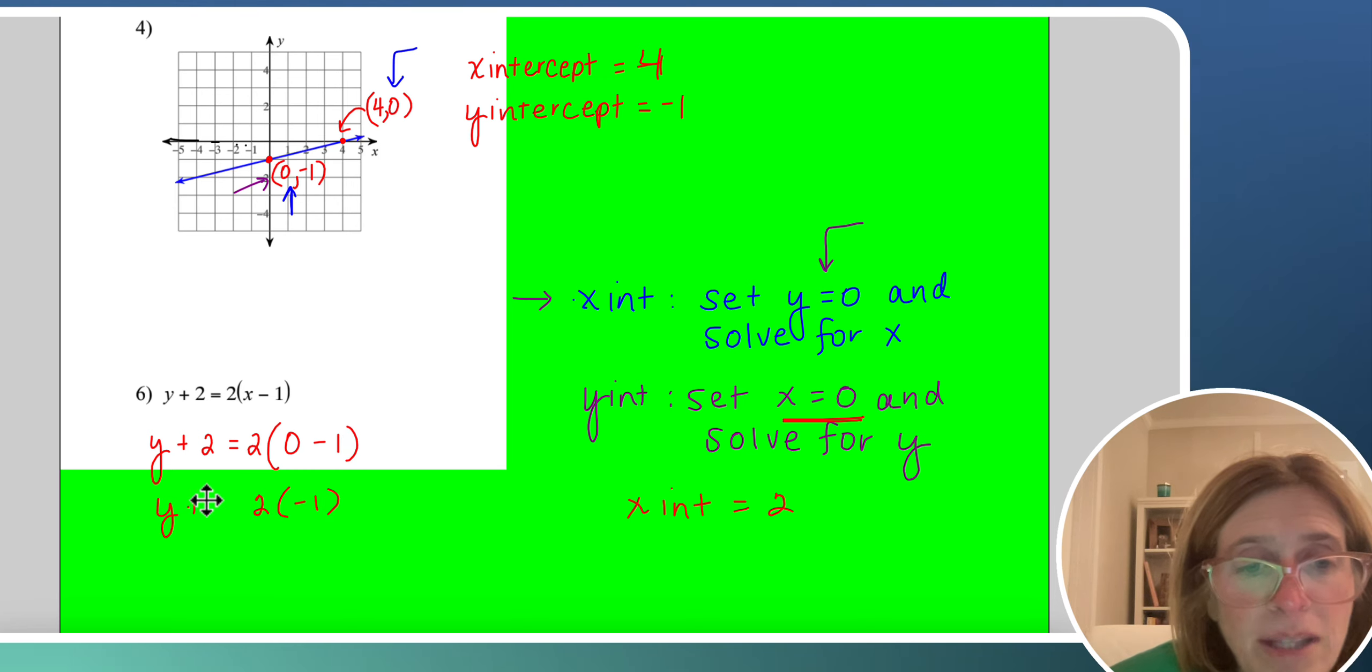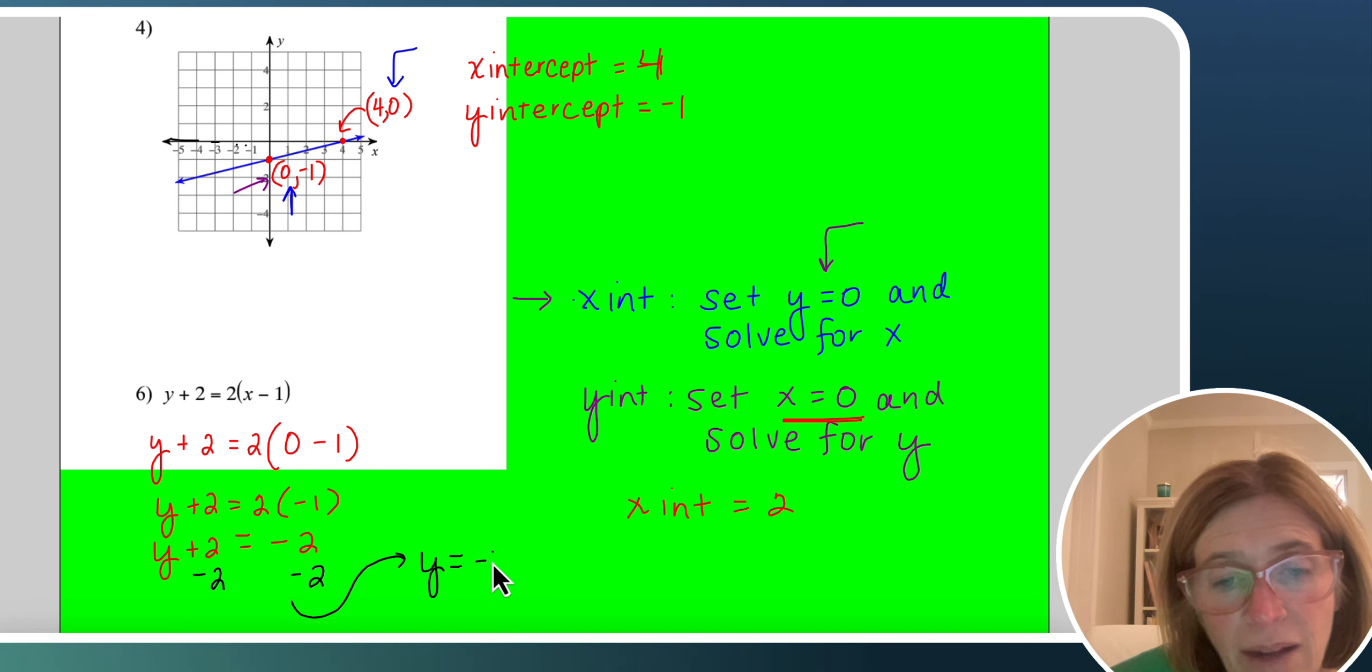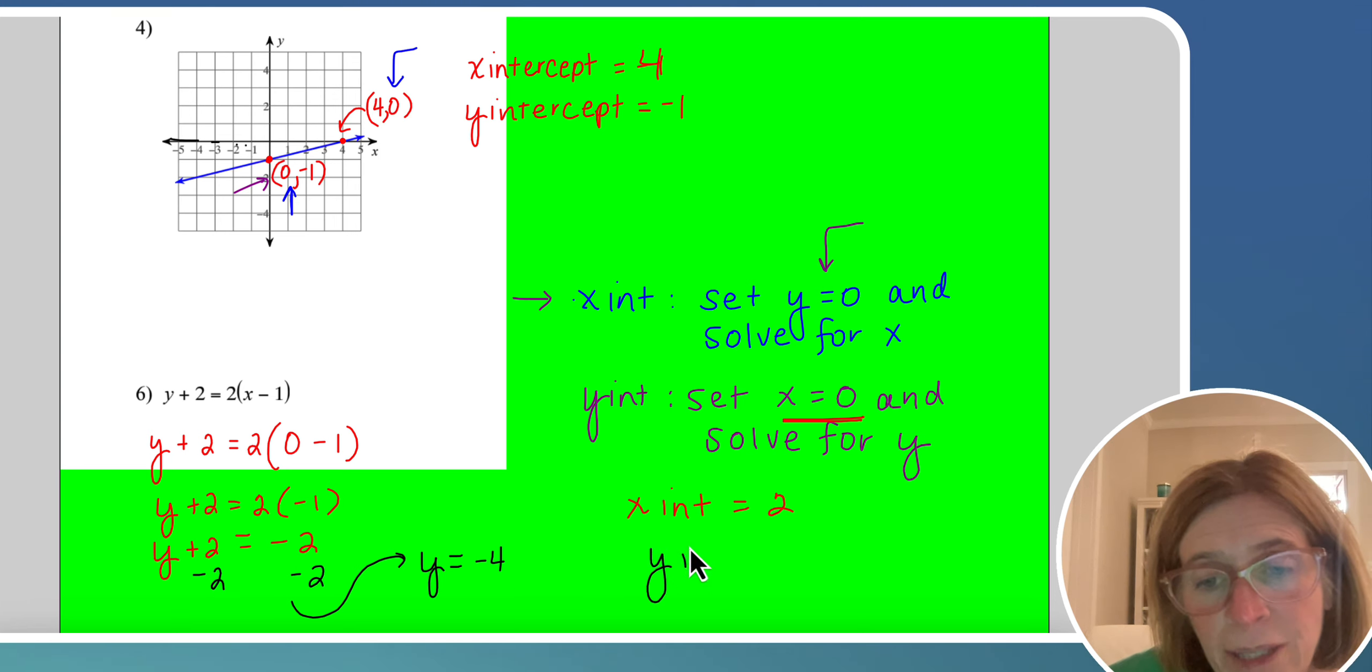So I have y plus 2 equals 2 times negative 1. 2 times negative 1 is negative 2. So I have y plus 2 equals negative 2. And I'm going to isolate y. I'm going to solve for y. So I'm going to subtract 2 to the other side, giving me y equals negative 4. So my y intercept is negative 4.